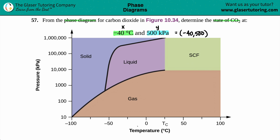Starting from the x-axis, I'm going to find negative 40 on the temperature axis. Negative 40 has to be between zero and negative 50. The middle marker between zero and negative 50 is negative 25, so I can gauge that negative 40 would be somewhere closer to the negative 50 side.